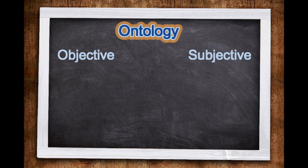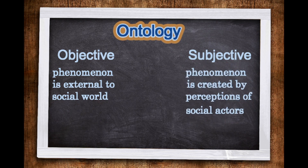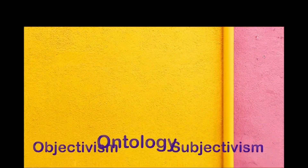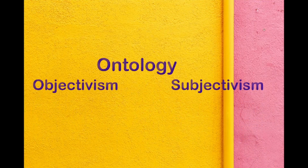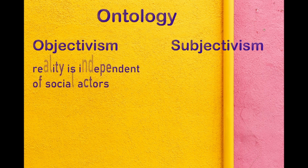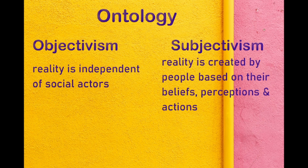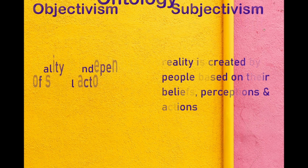Ontology presents a central idea of whether identities are perceived through objective or subjective lenses. Thus, within the field of research, it is determined whether the phenomenon or problem at hand is external to the social world or is created by perceptions of social actors. This lays the foundation of objectivism and subjectivism. Objectivism portrays that reality is independent of social actors, while subjectivism perceives reality as created by people based on their beliefs, perceptions, and actions.